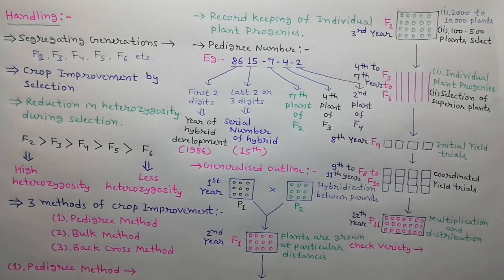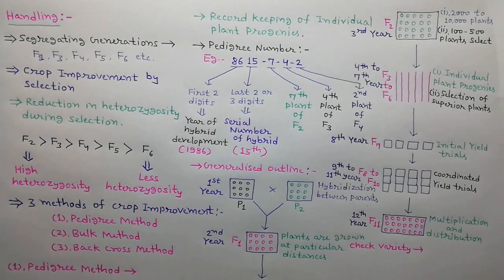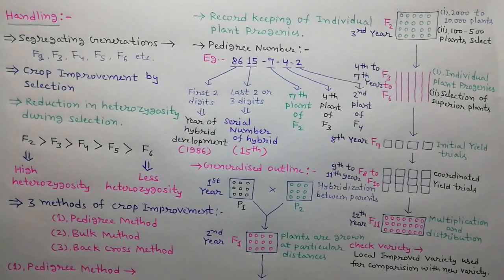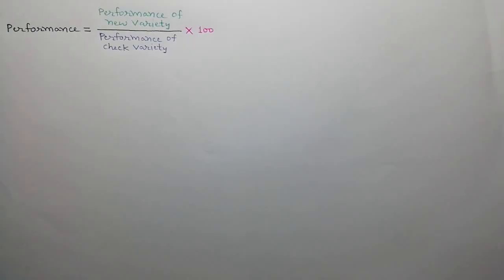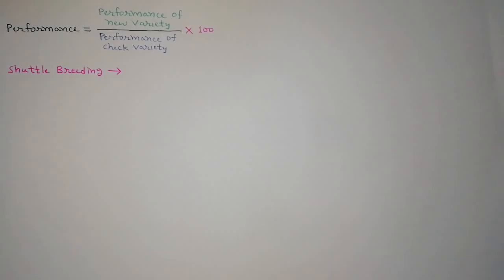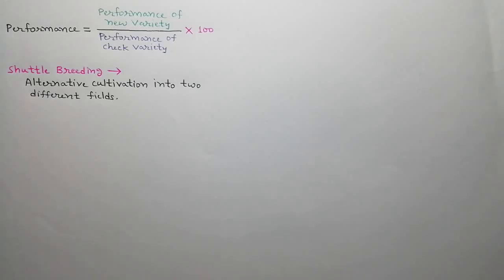Next we will discuss about some points such as Czech variety and shuttle breeding. A Czech variety is a local improved variety which is used to compare the performance of a newly developed variety. Performance of a new variety compared to the Czech variety can be calculated with the formula: Performance = (performance of new variety / performance of Czech variety) × 200. Shuttle breeding is when segregating generations are grown alternatively in two different fields.